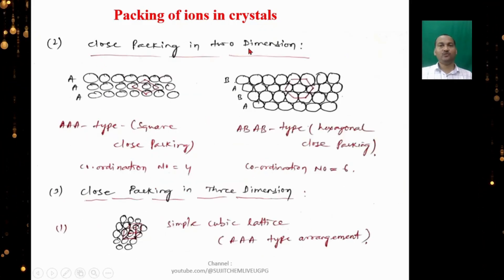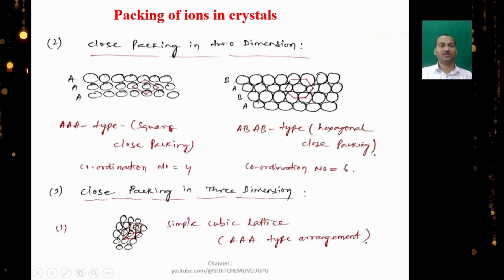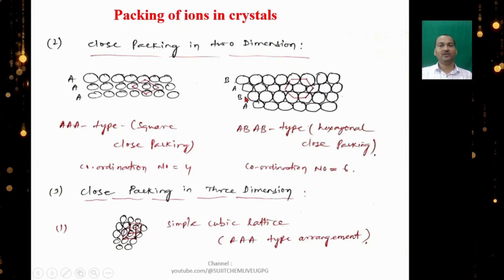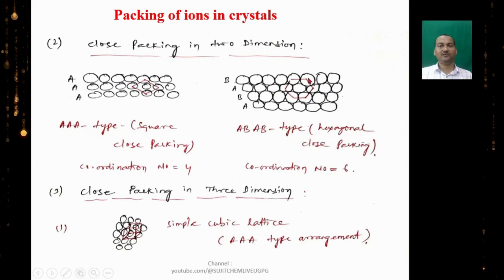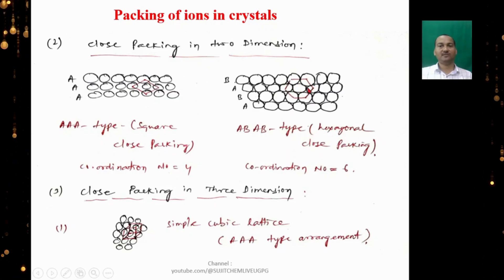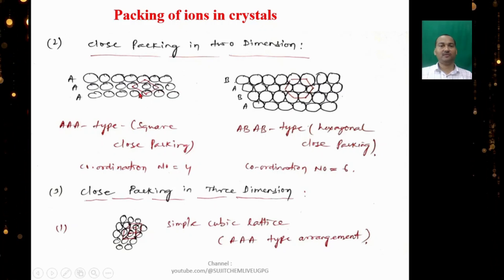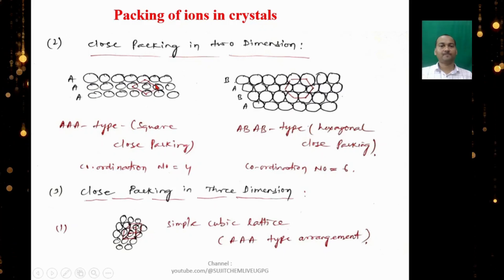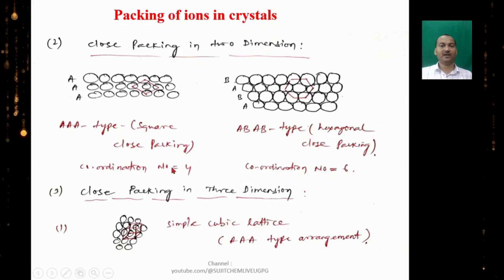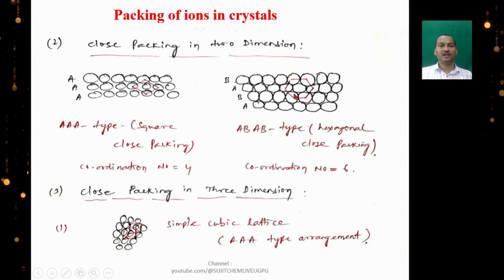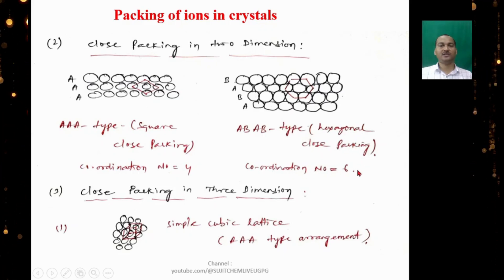Close packing in two dimensions can occur in two ways. The AAA-type arrangement is called square close packing, where the coordination number is 4. Alternatively, the ABAB-type arrangement is called hexagonal close packing, where atoms align center-to-center in a hexagonal pattern, giving a coordination number of 6.